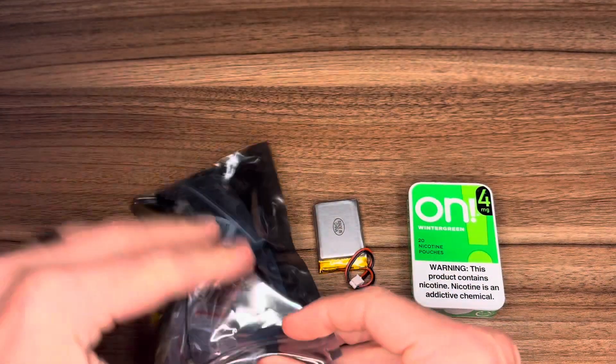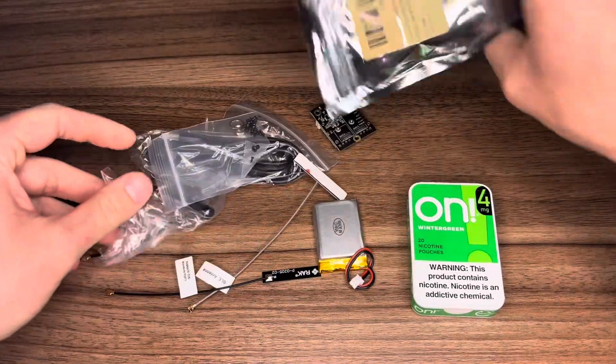So starting off you're going to need three things: an empty vessel, a battery, and a meshtastic starter kit.